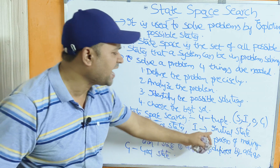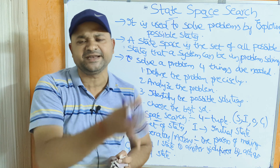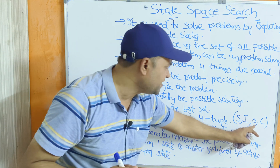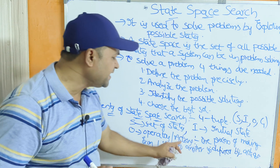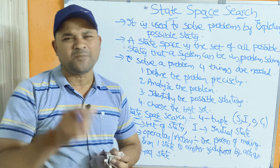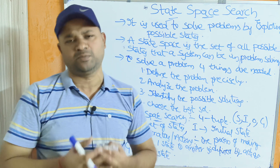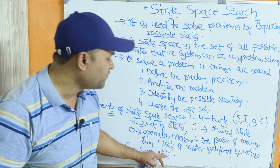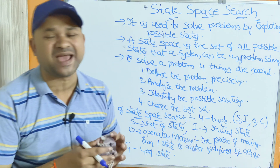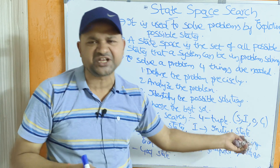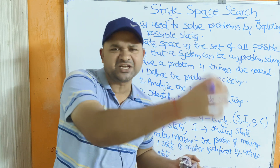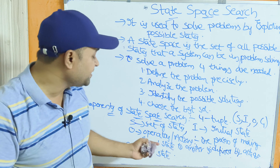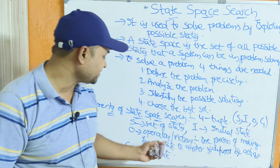I means initial state — initially, the problem will be in the initial state, which is the starting configuration of the system. O stands for operators or actions. Operators or actions will differ from problem to problem. The process of moving from one state to another is defined with the help of actions — we apply various operations or actions to go from initial state to final state.